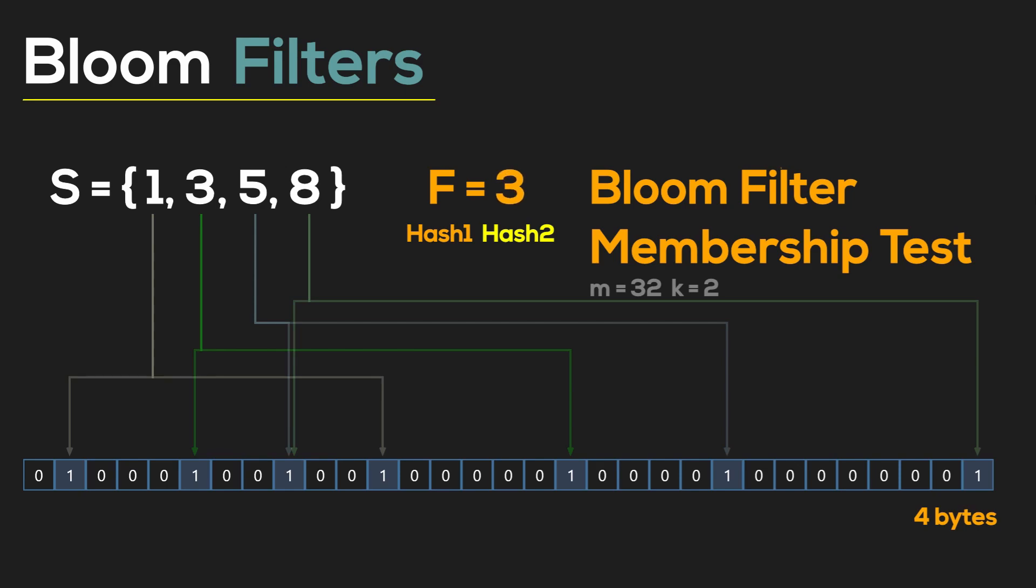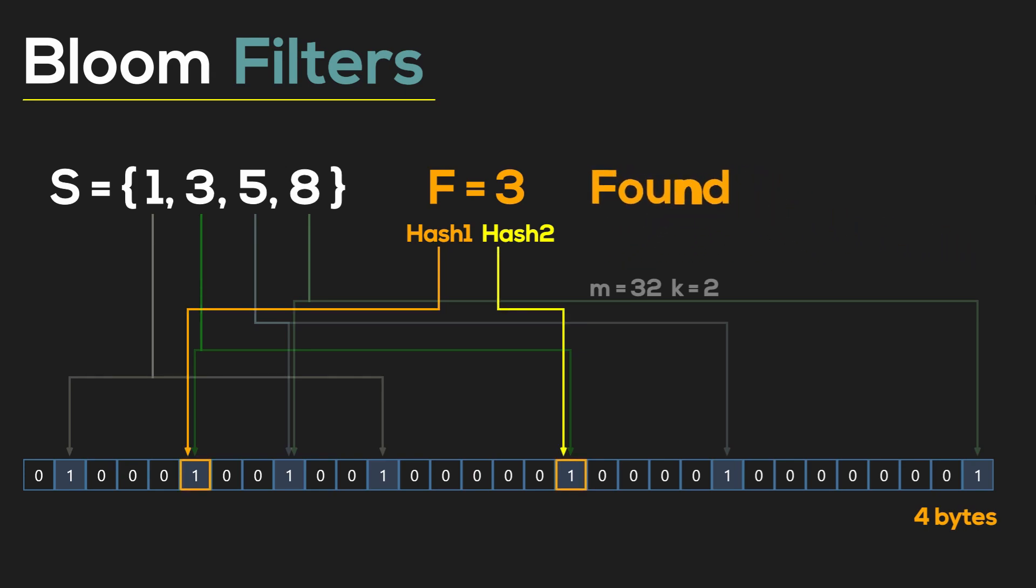Let's check if number three is present in the filter. To do that we have to use the same hashing functions as we did for the entire set S, and if all entries resolve to one then the element is in the bloom filter.